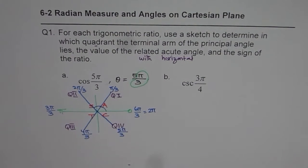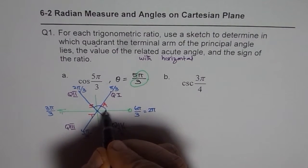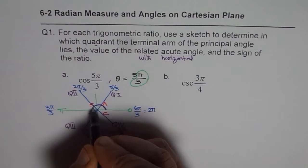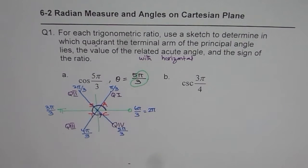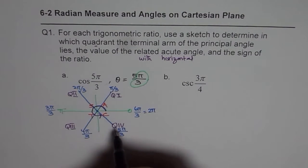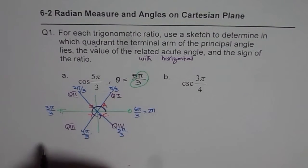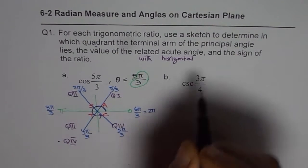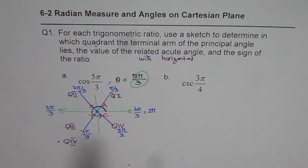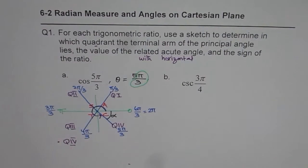Clearly, the principal angle five pi by three lands here: one pi by three, two pi by three, three pi by three, four pi by three, five pi by three. So it is in quadrant four. We can write down that the quadrant is quadrant four for the principal angle. The related acute angle means the angle with the horizontal, so let's call it alpha.